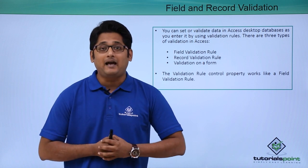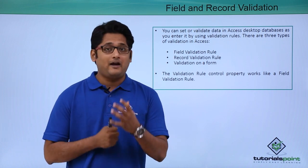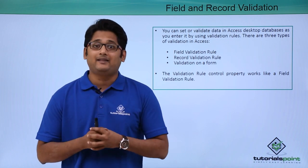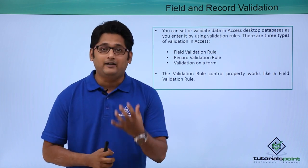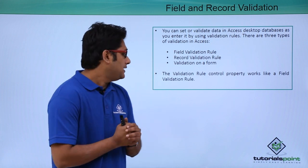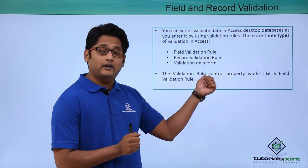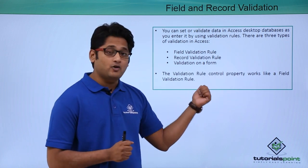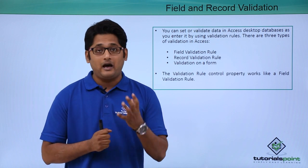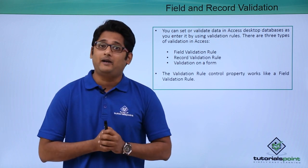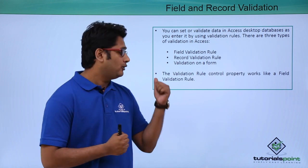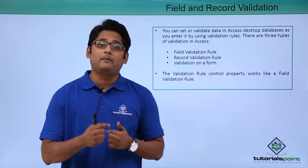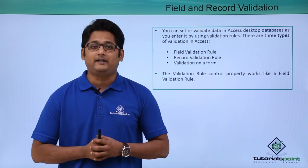For example, if I have a form in which I just have to enter a particular record or particular field types or data types, I will apply a validation to that particular form. The validation rule control property is similar to the field validation rule that we have learned in our data sheet view. That validation is similar to this, and we will get a better understanding of how to apply all this validation in our practical approach.